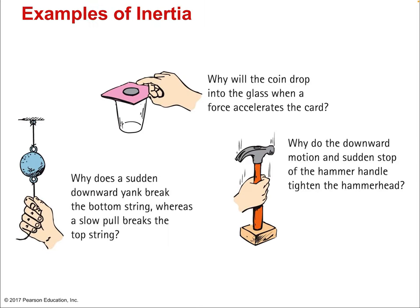What are some other examples of inertia? We talked about pulling a piece of paper and having a coin drop into a cup — a neat trick. Here is another example: why do the downward motion and sudden stop with a hammer handle tighten the hammerhead? Because of inertia. The hammerhead wants to keep going and can't stop without any force, so it uses the friction of the attachment to the shaft to stop, which causes it to become tightened.